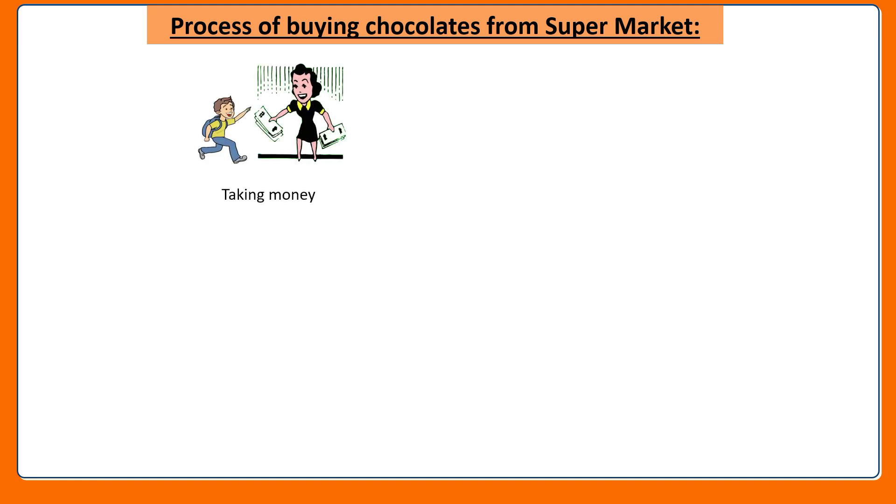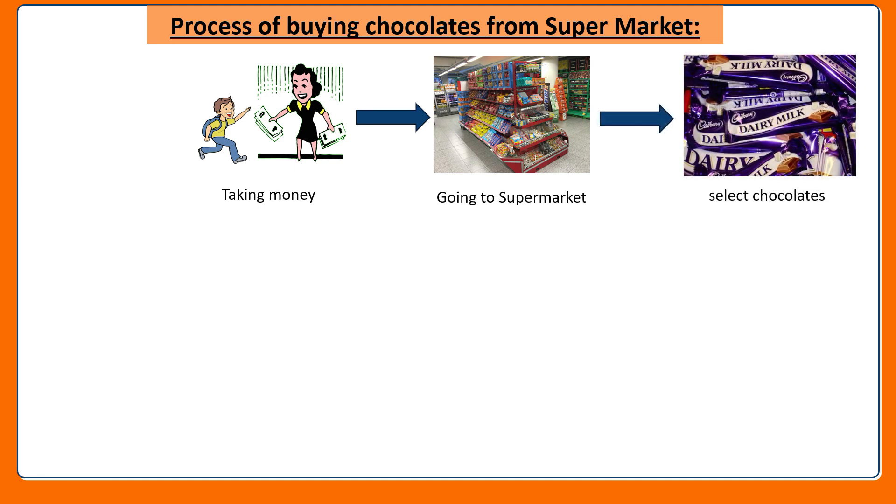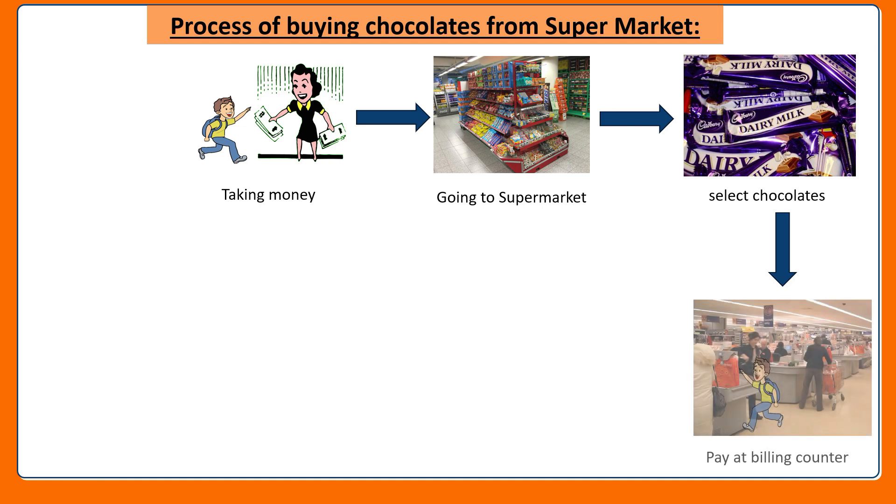First, take money from your parents. Next, go to the supermarket nearby. Then check your budget and select the chocolates. Then pay for the selected chocolates at the billing counter. Finally, receive the chocolates and come back home.